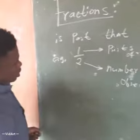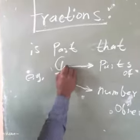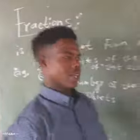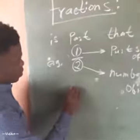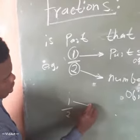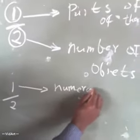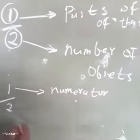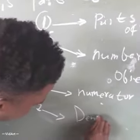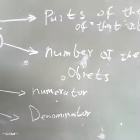You can also ask yourself what are the names of the two numbers involved in a fraction. The top number, which is our one here, is called the numerator. While the bottom part is called the denominator.